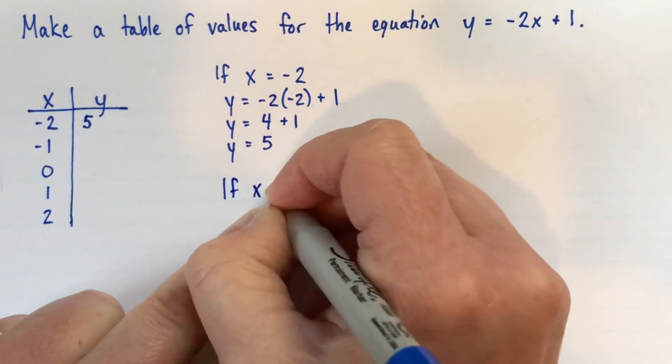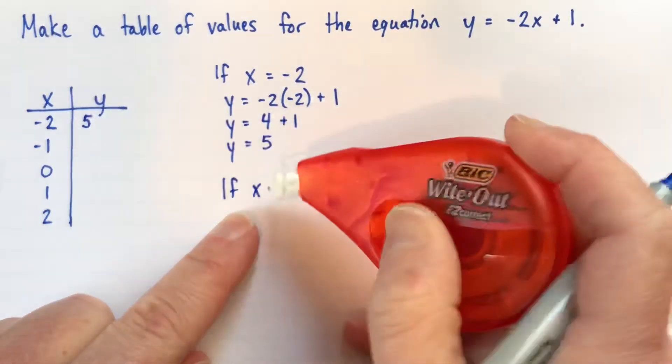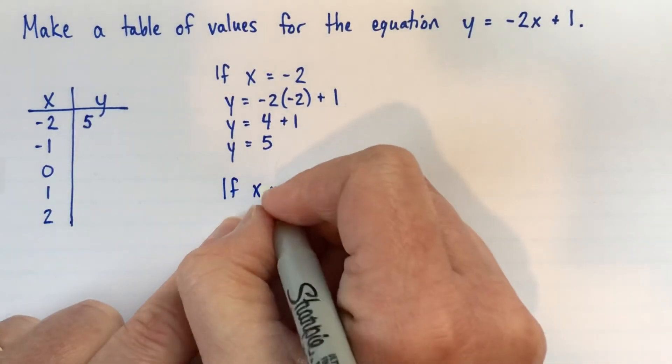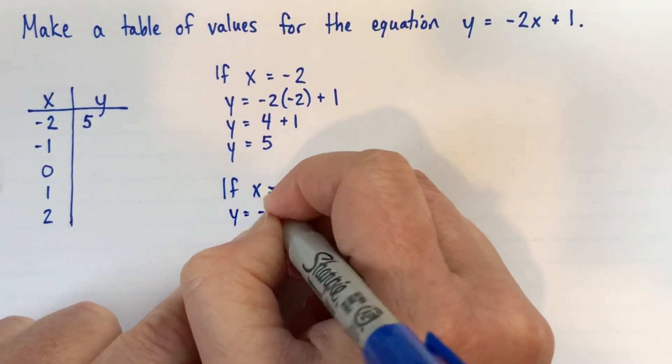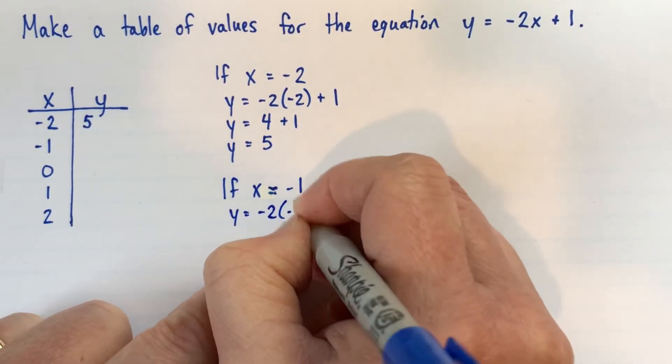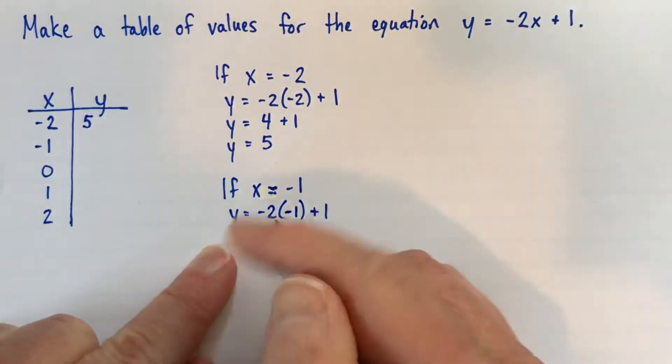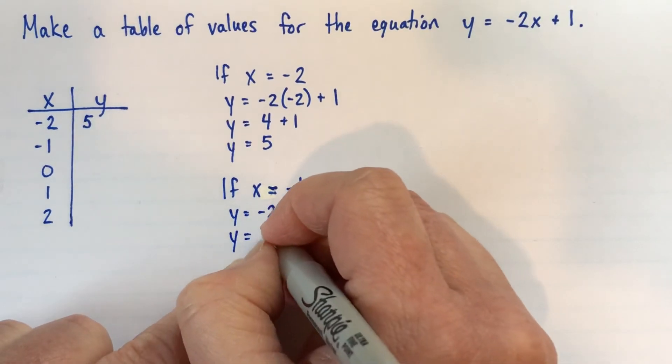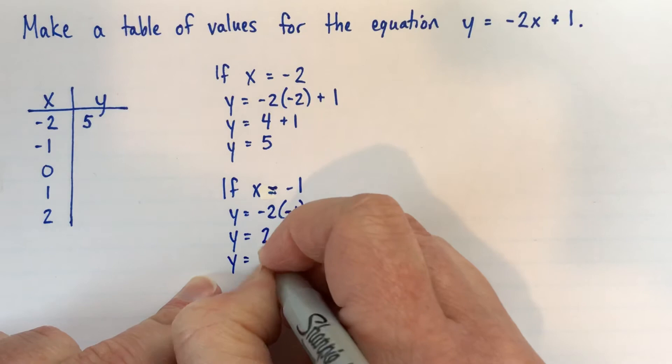If x equals negative 1, y is equal to negative 2 times negative 1, plus 1. So I've just replaced my x with negative 1. Negative 2 times negative 1 is positive 2, plus 1, so that's 3.